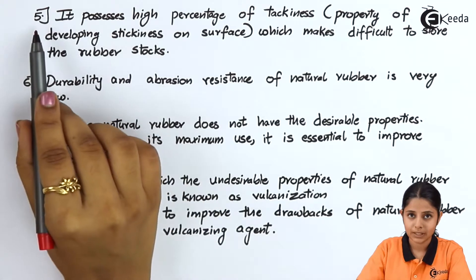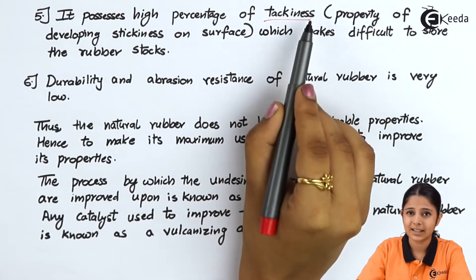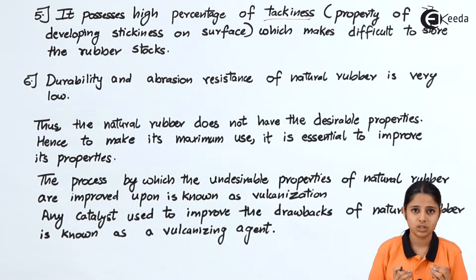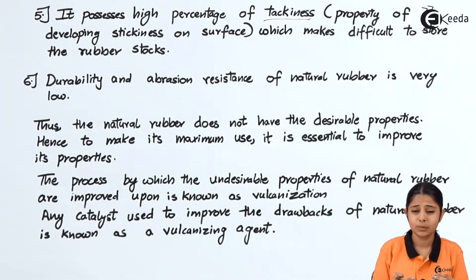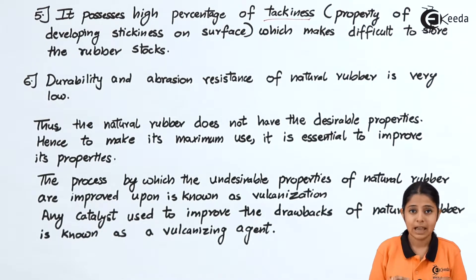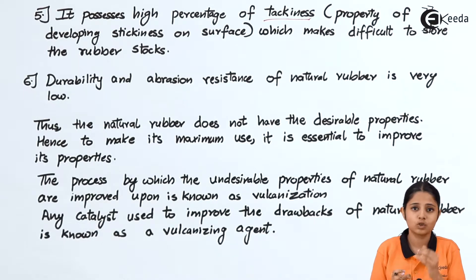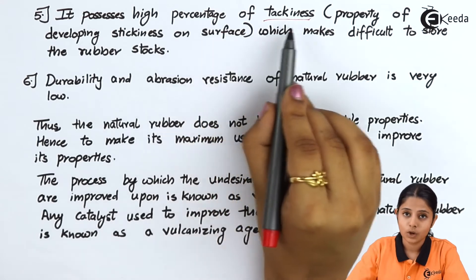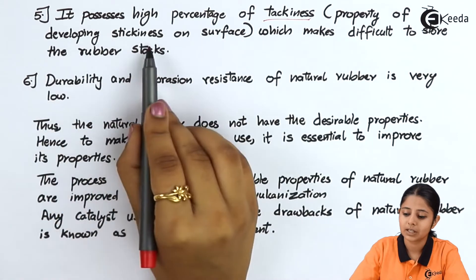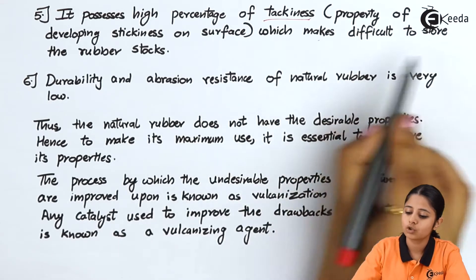The fifth property is that it possesses a high percentage of tackiness. Tackiness is associated with stickiness. If I take natural rubber and touch it, there are high chances of it sticking to my fingertips. If a rubber band sticks to paper, it may degrade the quality of the paper and it is very difficult to remove, making the rubber difficult to store. High tackiness makes it difficult to store rubber stocks.